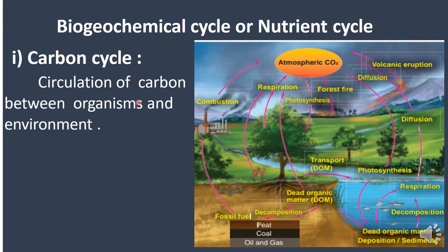What is the carbon cycle? It is the circulation of carbon between organisms and the environment — how carbon circulates within the ecosystem among all organisms. Carbon is an important part of biomolecules such as carbohydrates, proteins, fats, DNA, and RNA.